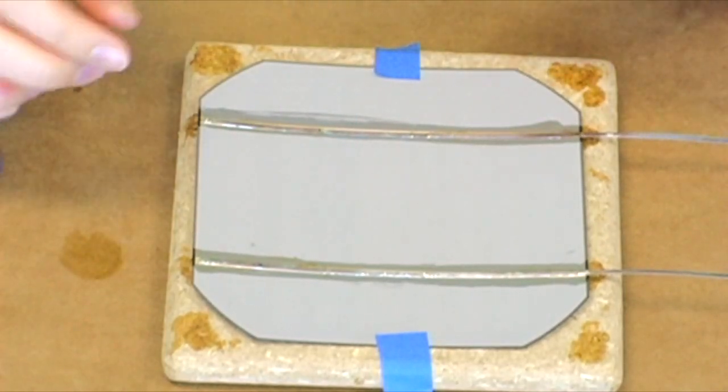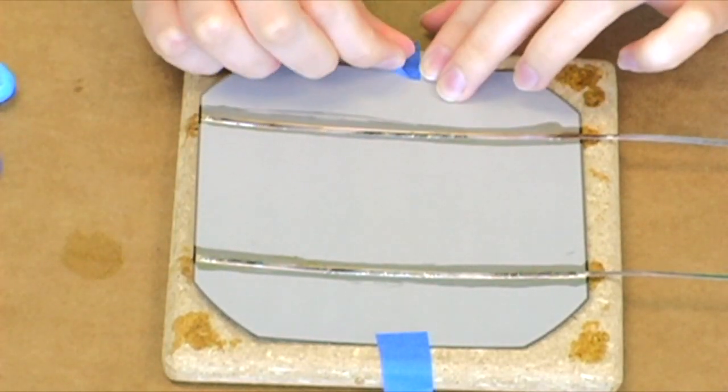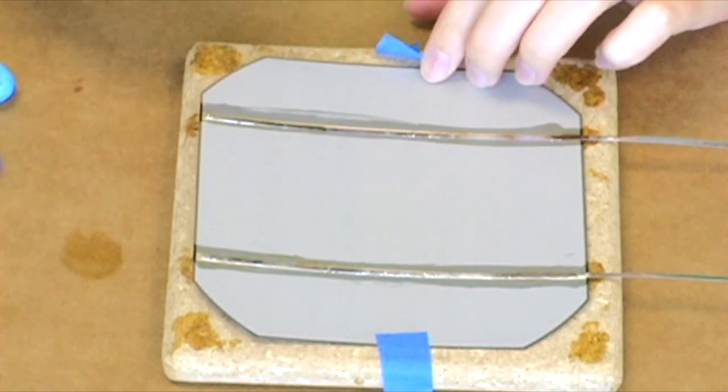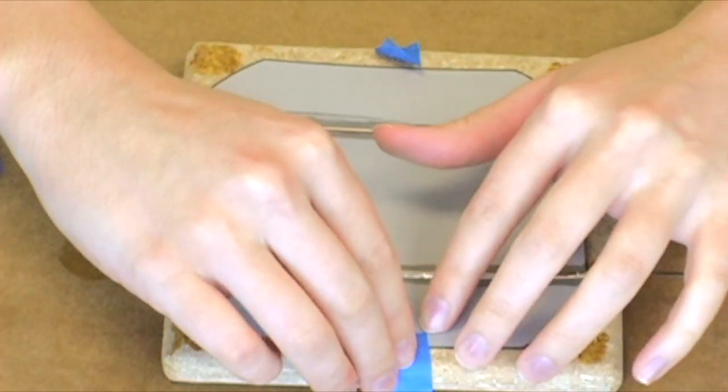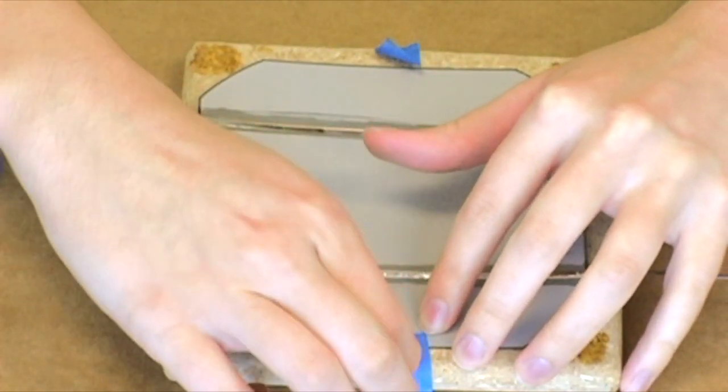Congratulations! We've now officially pre-tabbed our first solar cell. Now we're ready to remove the cell from our cell workbench and move it to a safe place while we pre-tab the other 11 cells.